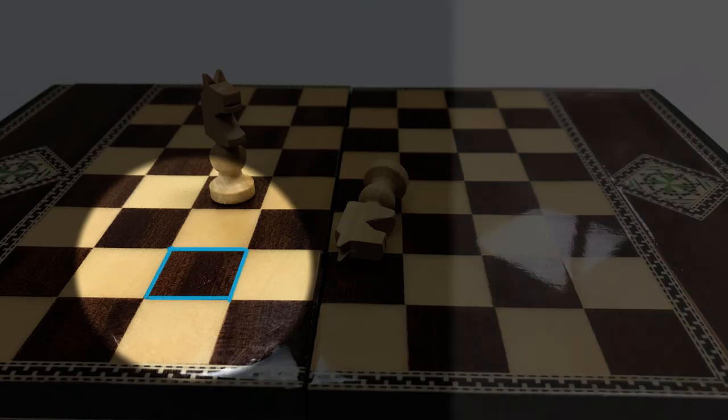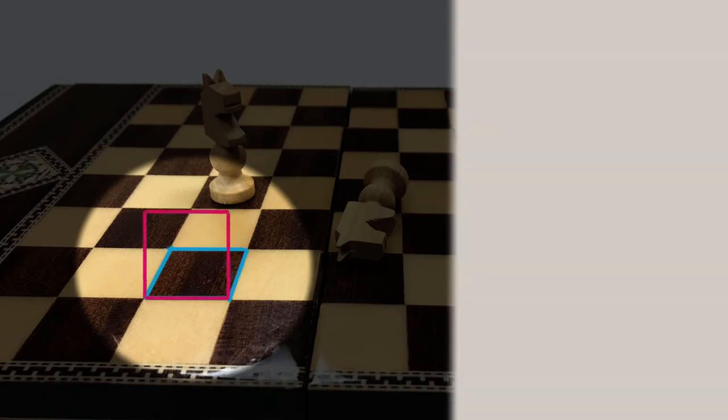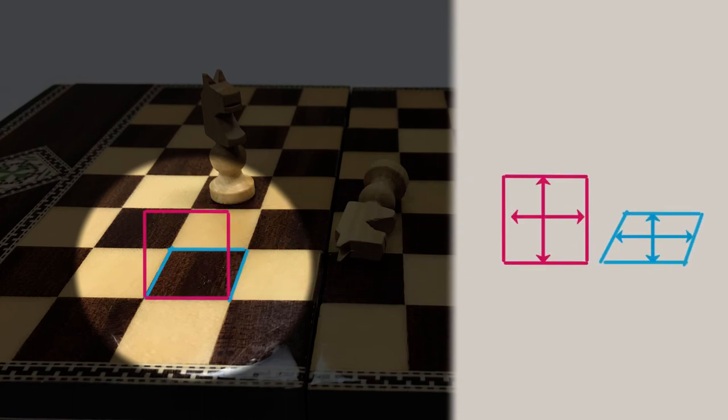The same effect happens with the squares on the chess board. The squares become much shorter than they are wide as they turn back in space.